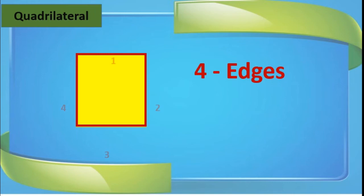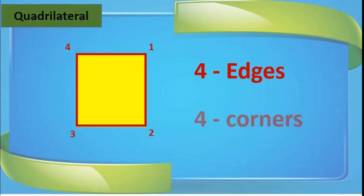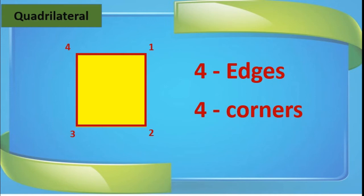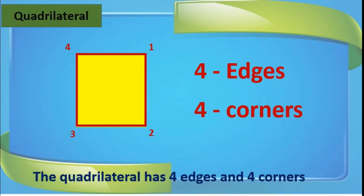Now we will count the corners. This is the corner — the joint. First, second, third, fourth. The quadrilateral has four corners. So we can write the statement: the quadrilateral has four edges and four corners. And this is fixed.